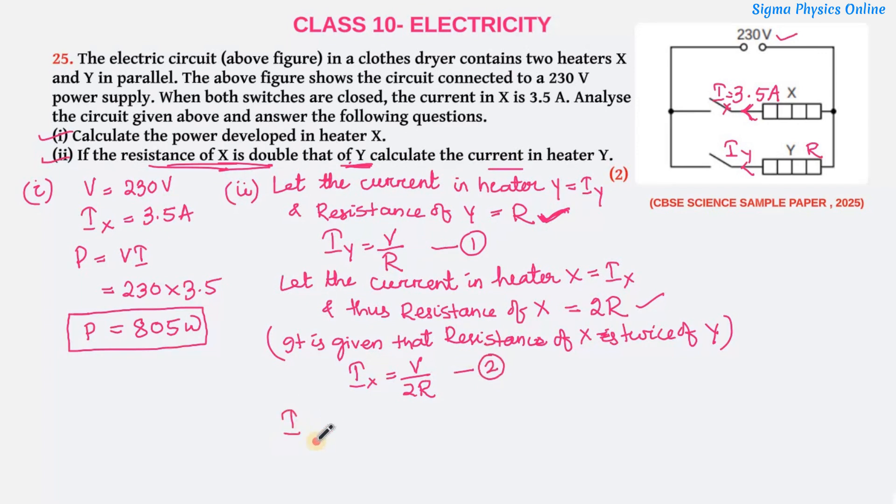Now let's find out the ratios. IX by IY is V by 2R divided by V by R. So VV cancels, RR cancels, it's 1 by 2, which implies IX by IY is 1 by 2, or cross multiplying, 2 IX is IY.